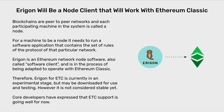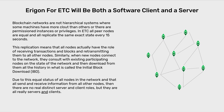Core developers have expressed that ETC support is going well for now. Eragon for ETC will be both a software client and a server. Blockchain networks are not hierarchical systems where some machines have more clout than others or there are permission instances or privileges. In ETC, all peer nodes are equal and all replicate the same exact state every 15 seconds. This replication means that all nodes have the role of receiving transactions and blocks and retransmitting them to all other nodes. Similarly, when new nodes connect to the network, they consult with existing participating nodes on the state of the network and then download from them all the history in what is called the Initial Block Download or IBD. Due to this equal status of all nodes, there are no real distinct server and client roles — they are all really servers and clients.